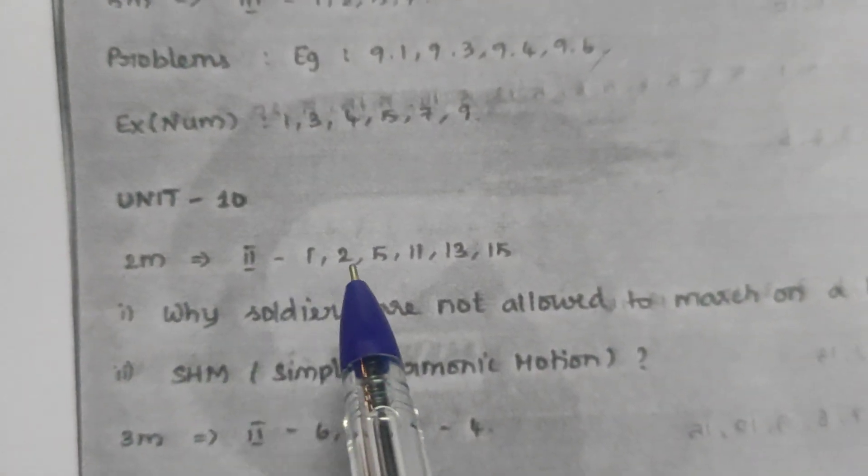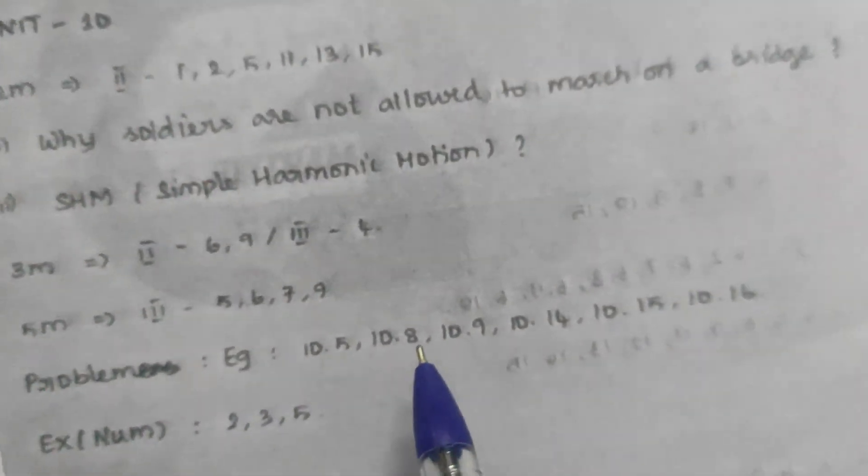Unit 10 continued: 2-mark — 12, 6, 9, 11, 13, 15. 3-mark — 12, 5, 6, 7, 9. Problems: 10.5, 10.8, 10.9, 10.12, 10.15, 10.16. Exercise numbers: 2, 3, 5. That's the cutacy exercise — cutacy chapter.